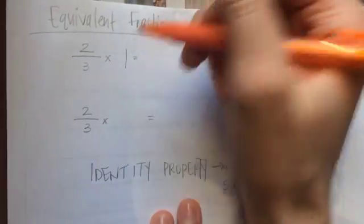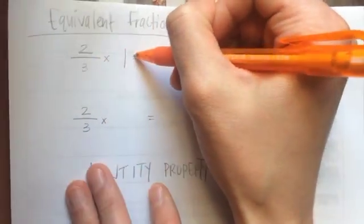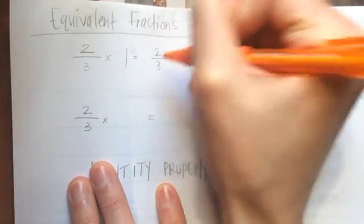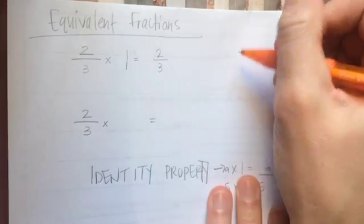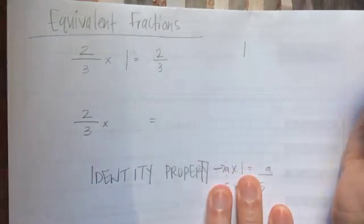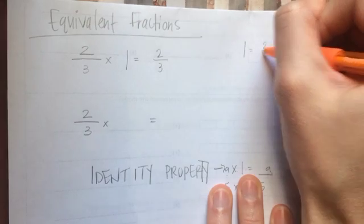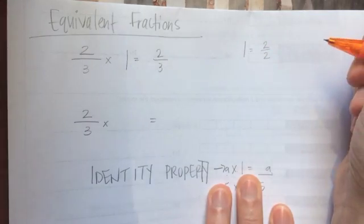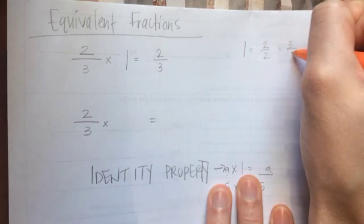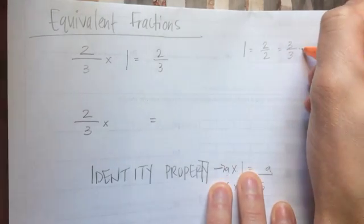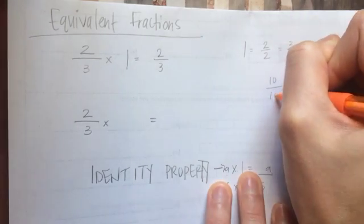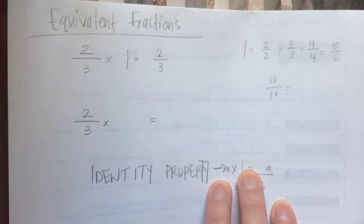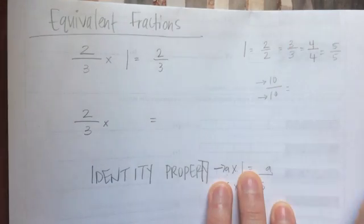The same thing works when we're talking about fractions. 2 thirds times 1 whole is going to be 2 thirds. We can apply this identity property to also make an equivalent fraction. I know that 1 whole is equal to a lot of different things. For example, if I have 2 halves, that's the same thing as 1 whole. If I have 3 thirds, that's the same thing as 1 whole. So is 4 fourths, so is 5 fifths, so is 10 tenths. I could keep going on and on as long as the numerator and the denominator are the same.